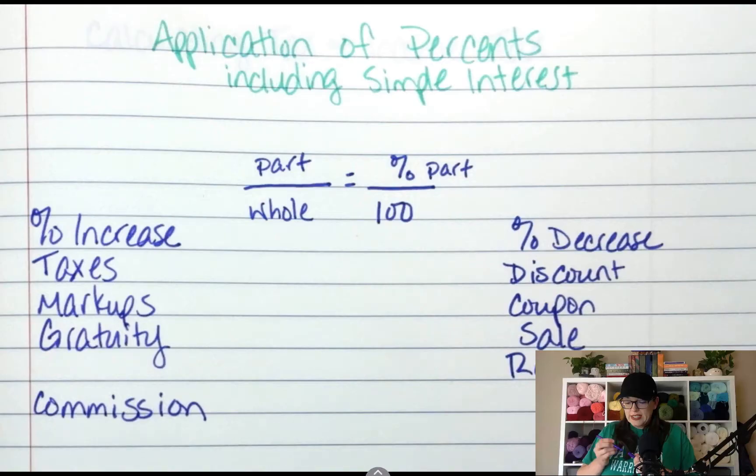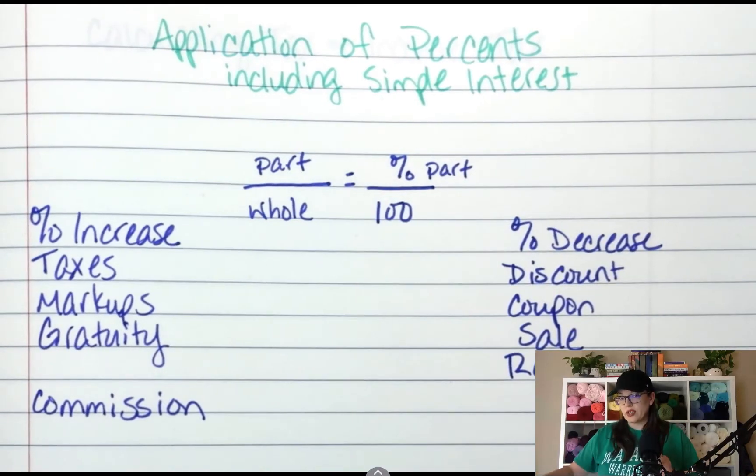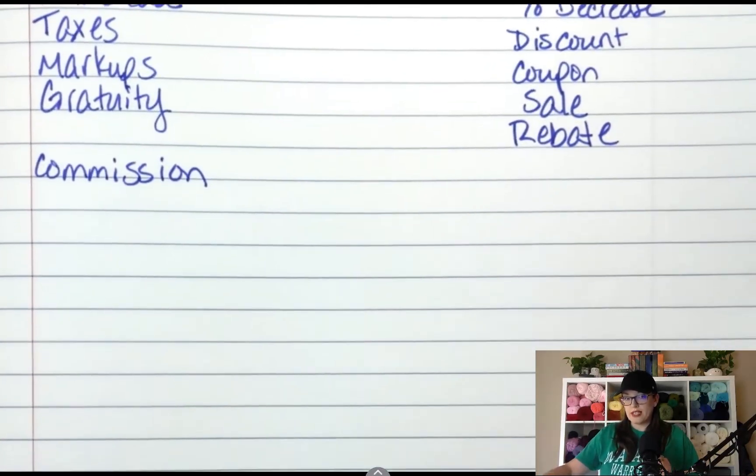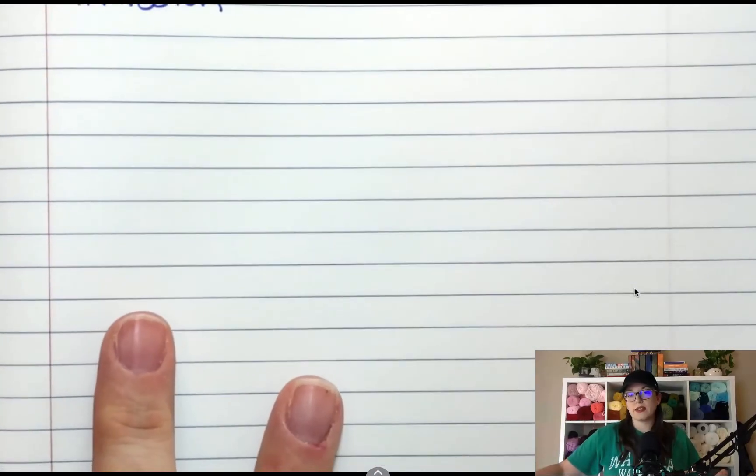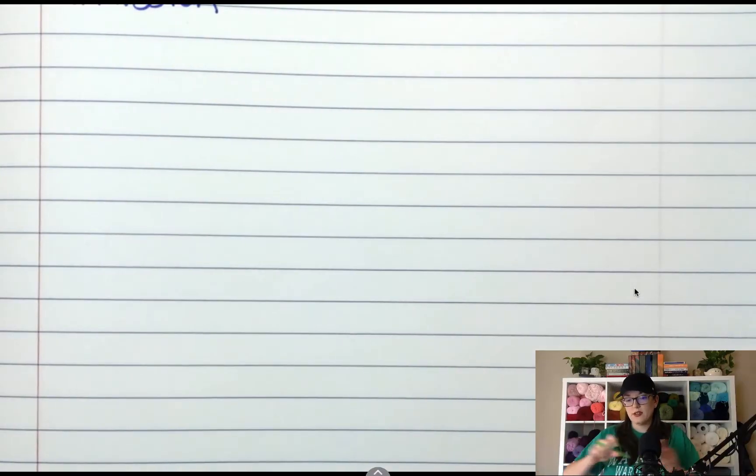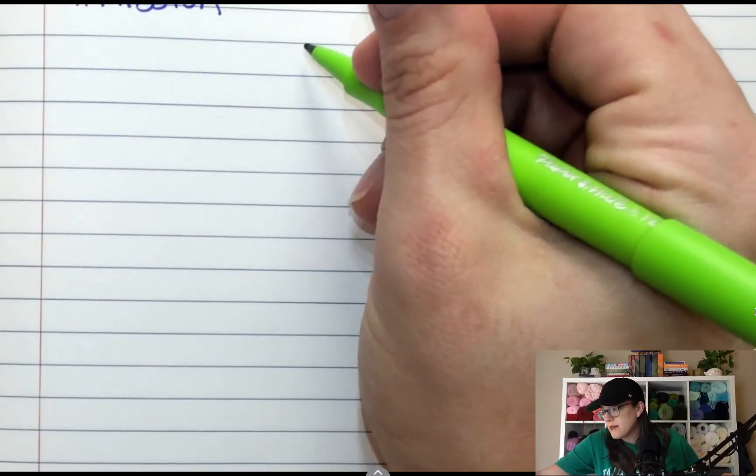So there's something that we need to add and it's called simple interest. And this is just kind of like a bonus add-on lesson to this lesson. And it deals with percents. So simple interest is the idea that you can borrow money and you pay back more. And that extra money you pay is like a fee for borrowing somebody's money.